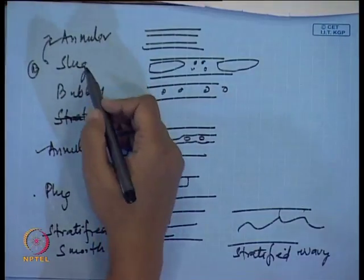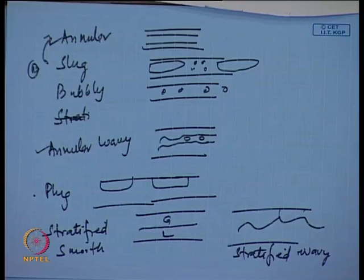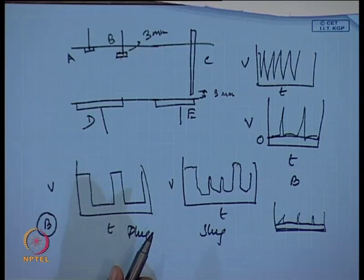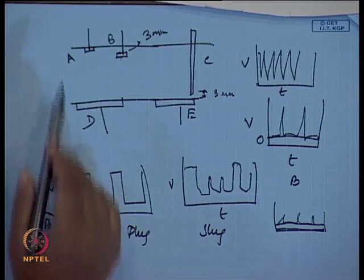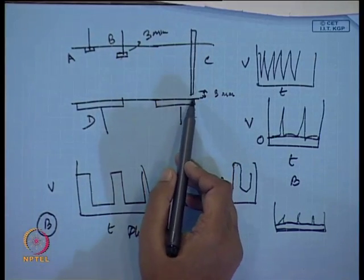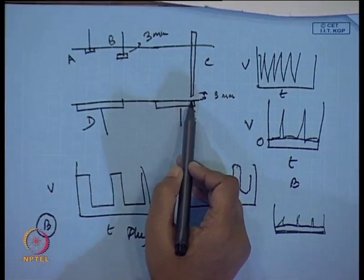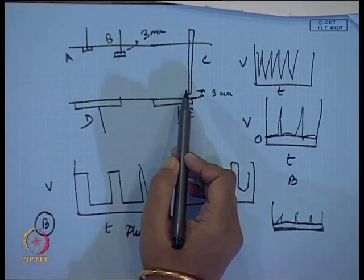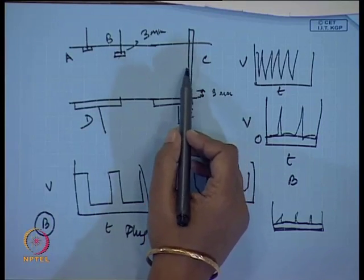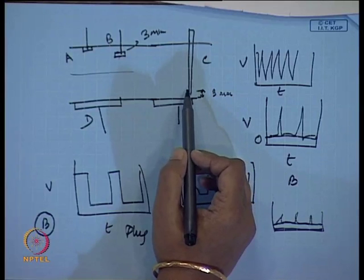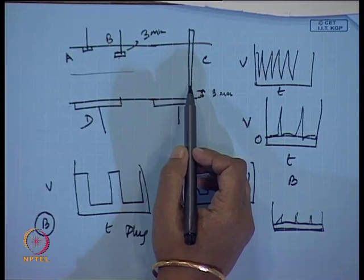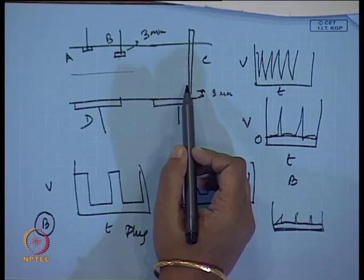We have differentiated between annular, slug, bubbly, annular wavy, and plug flow. For stratified flow, both probes A and B are completely dry — so to differentiate between stratified and stratified wavy, we use the uninsulated needle (probe C) which is about three millimeters from the bottom of the pipe. In stratified flow the liquid film thickness is more than three millimeters, so depending upon how much of the needle is immersed in water we get a signal from probe C. If the signal is fluctuating it shows stratified wavy; if the signal is smooth it shows stratified smooth flow.